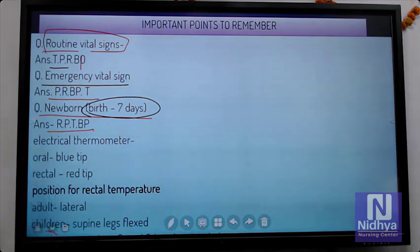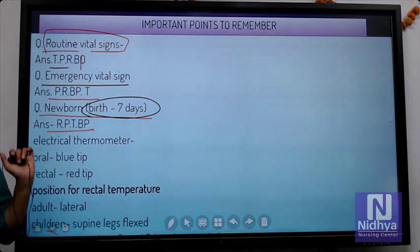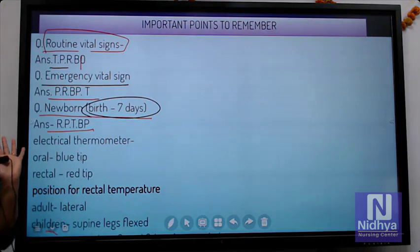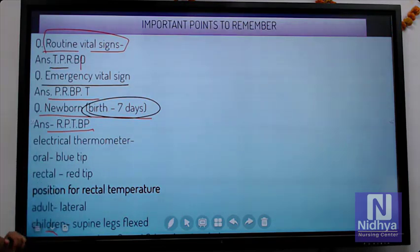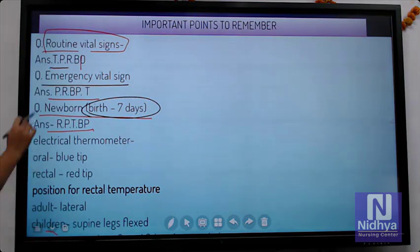This is very important. When checking vitals, TPR is correct for routine. But in emergency conditions, if a person is lying down and CPR is needed, what do we check first? Pulse. We check pulse first.